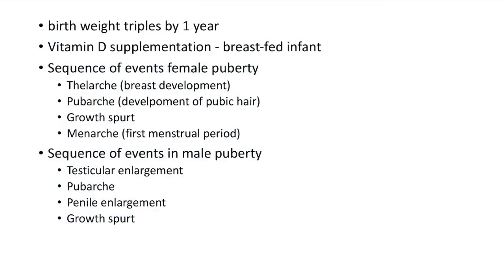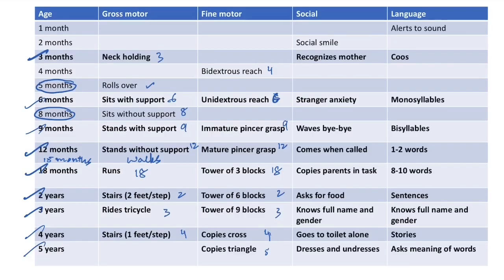Social milestones start at 2 months with social smile, then recognizes mother, then stranger anxiety, waves bye-bye, comes when called, copies parents in tasks, asks for food, knows full name and gender, goes to toilet alone, dresses and undresses. Language milestones start at 1 month — baby is alert to sound, then coos, then speaks monosyllables, bisyllables, 1-2 words, 8-10 words.